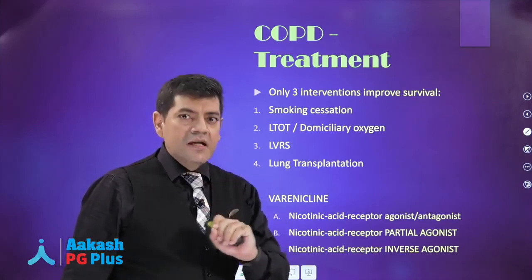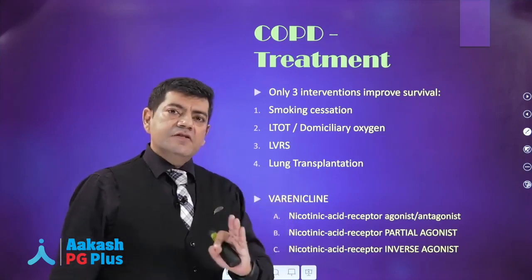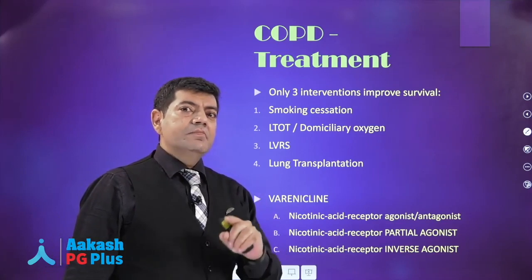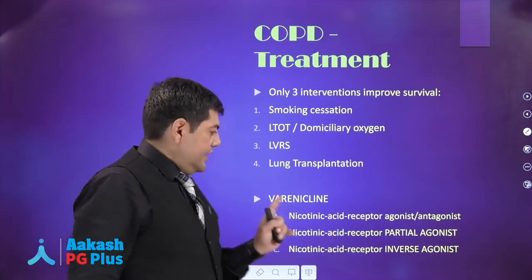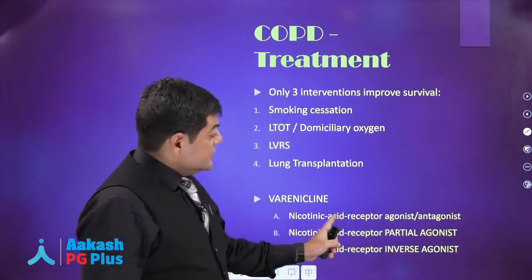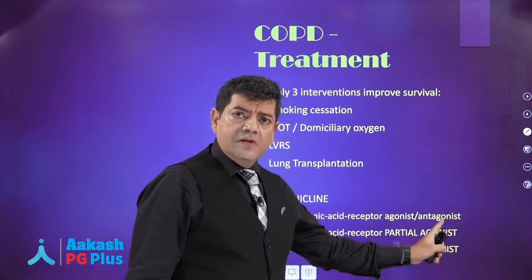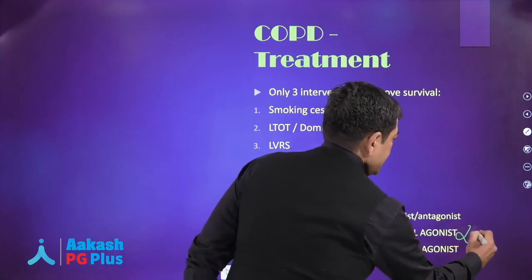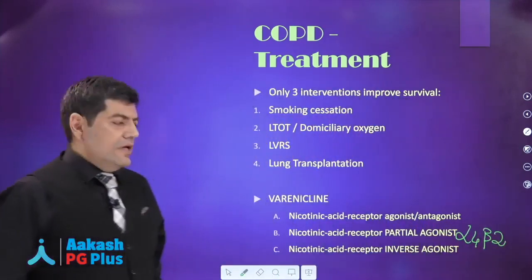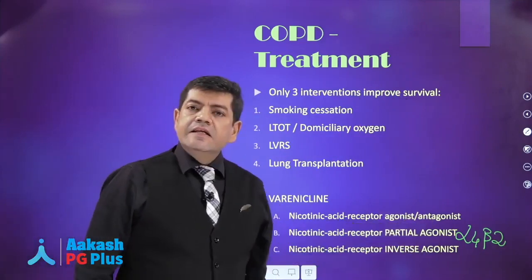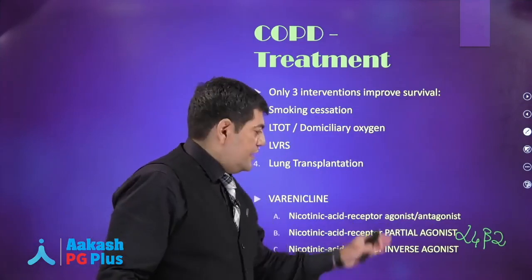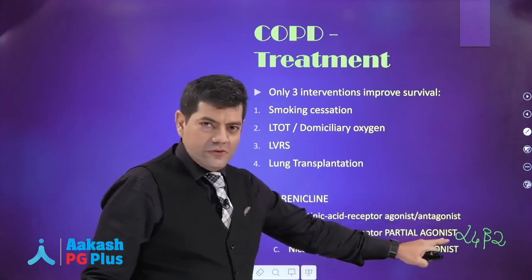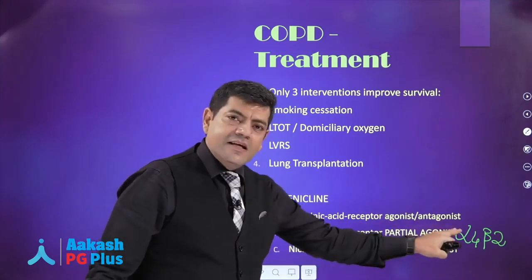A little bit of general pharmacology: what is a partial agonist? It produces partial effects of the full agonist, and in the presence of the full agonist, a partial agonist behaves as a competitive antagonist. That is what varenicline is — a partial agonist. Harrison's says it is a nicotinic acid receptor agonist-antagonist, while Goodman-Gilman says it is a partial agonist at the nicotinic alpha-4 beta-2 receptor. Technically the correct answer is partial agonist.